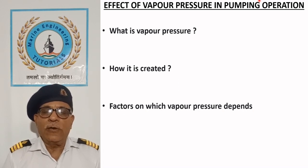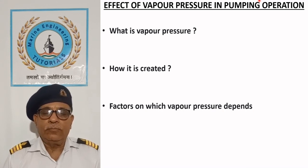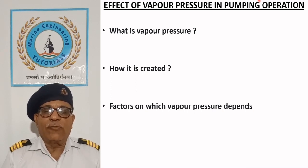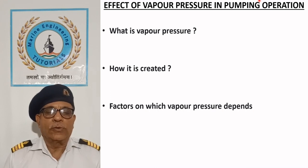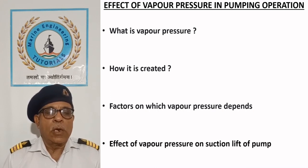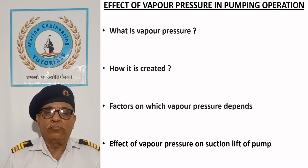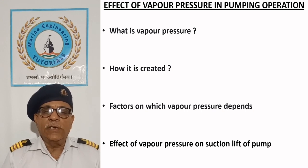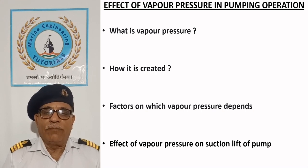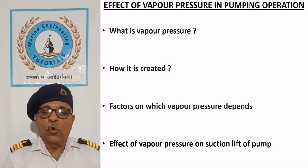Flammable liquids with flash point below 60°C give off more vapors and have high vapor pressure, in comparison with non-volatile liquids having flash point above 60°C and low vapor pressure. Vapor pressure of a liquid increases with increase in temperature due to increase in the kinetic energy of molecules. Increasing vapor pressure lowers the suction lift of the pump. Although water has low vapor pressure, it increases with rise in temperature and can affect pumping adversely, as shown in the next slide.